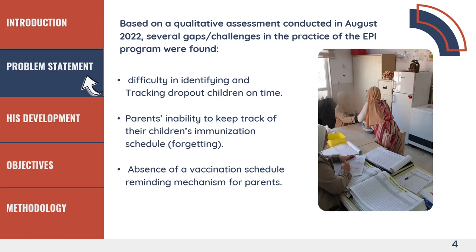From the baseline survey, the system is paper-based — a national system followed all over Iraq including the Kurdistan Region. Problems fall into two categories: system-related and parent behavior-related. The system-related issues stem from the paper base: it's difficult for health staff to identify and track dropout children, and there is no reminder mechanism for parents about their child's vaccination schedule. For parents, they tend to forget vaccination schedules, lose the vaccination booklet, or visit a different health unit, causing confusion about whether a child has been vaccinated.